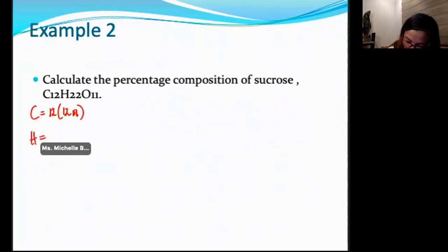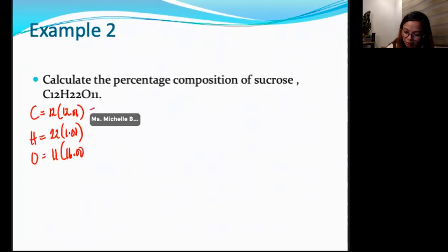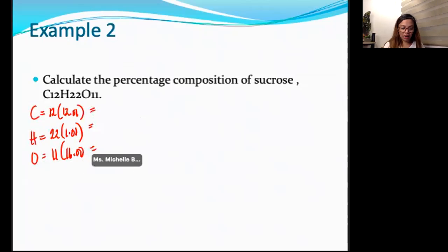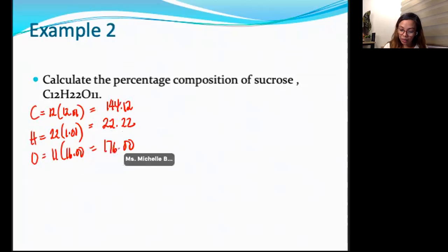H is, if I'm doing the shortcut method already, 22 times 1.01. And then oxygen, 11 times 16.00 atomic mass. So, let's get 12 times 12.01 is equal to 144.12. Next, this is 22.22. So, 11 times 16 is 176.00.